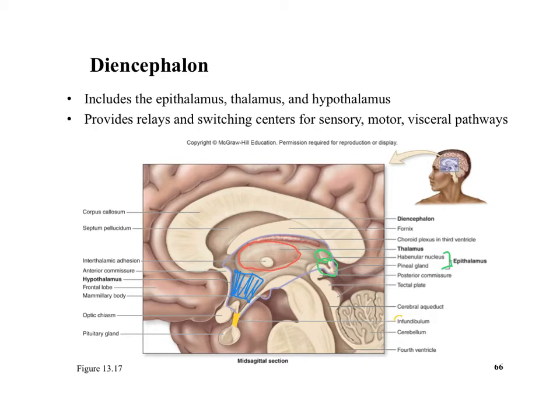At the inferior part of the hypothalamus is a funnel-shaped structure called the infundibulum, which connects the hypothalamus to the pituitary gland. The pituitary gland is two-colored because the anterior pituitary is derived from epithelial tissue that secretes hormones, while the posterior pituitary is derived from nervous tissue similar to that in the brain.